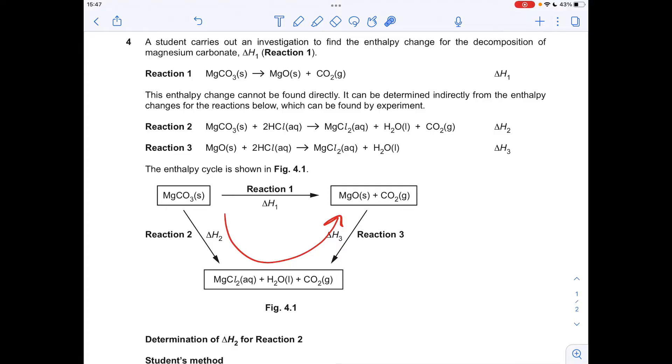So if we take the enthalpy change for reaction 2, but then we're going to have to subtract the enthalpy change for reaction 3 because this arrow has gone in the wrong direction, we can actually find this enthalpy change here. So that's what we're going to do.